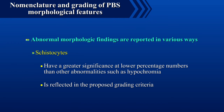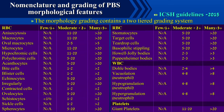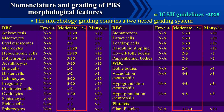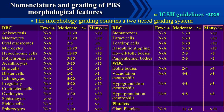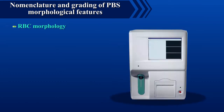According to the latest guidelines given by ICSH in 2015, the morphology grading contains a two-tiered grading system: moderate as 2+ and many as 3+. The designation for few or rare as 1+ is reserved only for cystocytes, as their observation even in small numbers is clinically significant.